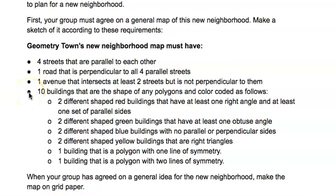And then it needs to have these ten buildings: two different shaped red buildings that have at least one right angle and at least one set of parallel lines; two different shaped green buildings that have at least one obtuse angle; two different shaped blue buildings with no parallel or perpendicular lines; and one building that is a polygon with two lines of symmetry. You can decide on the color of these two buildings.